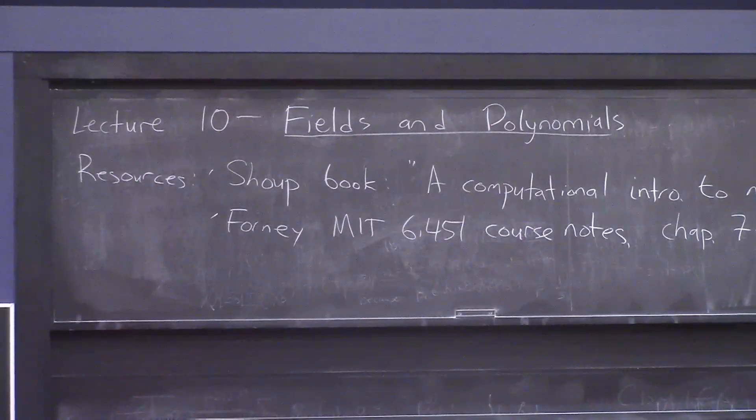So fields and polynomials are an important topic to know about in computer science theory. They come up a lot, and I want to tell you about them today and about how you can actually work with them algorithmically. Many times a paper will just be like, okay, let's choose a field of size 2^n and then start manipulating some polynomials, so today we'll talk about how all that works.